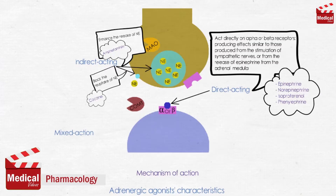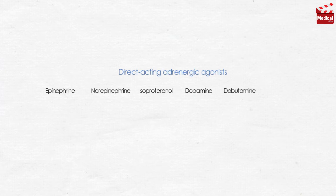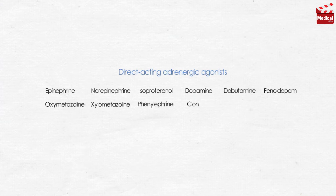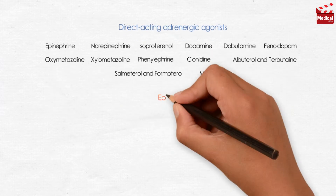The direct acting agonists bind to adrenergic receptors on effector organs without interacting with the presynaptic neuron. They are widely used clinically. In two lectures we'll discuss epinephrine, norepinephrine, isoproterenol, dopamine, dobutamine, fenoldopam, oxymetazoline, xylometazoline, phenylephrine, clonidine, albuterol and terbutaline, salmeterol and formoterol, and mirabegron.